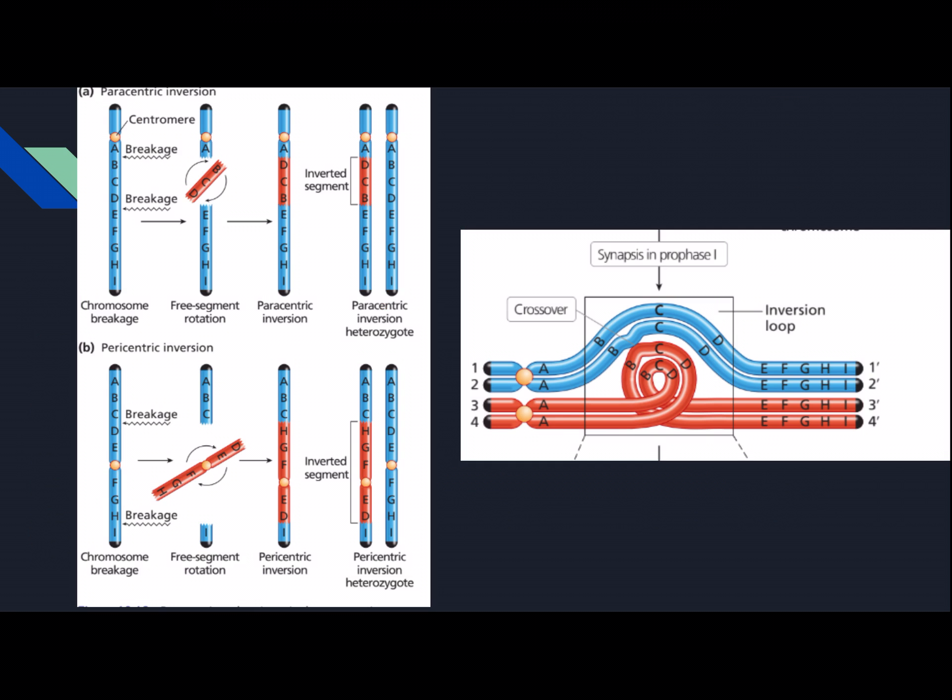Here is a picture of inversion. You can see this is a loop — synapse is in prophase 1, and that's the inversion loop, pericentric. Just pause the video and look at this and analyze it for yourself.